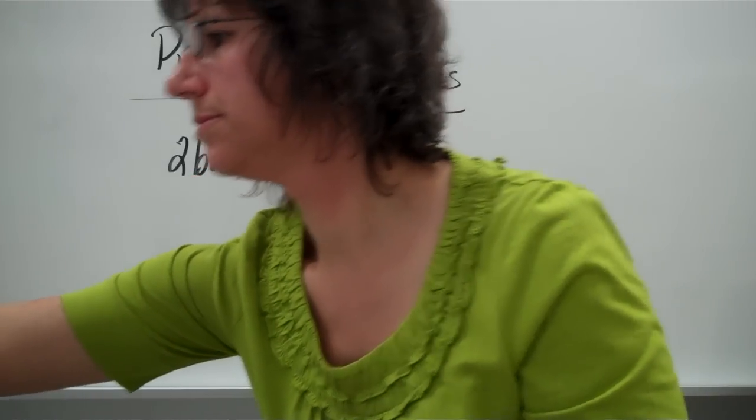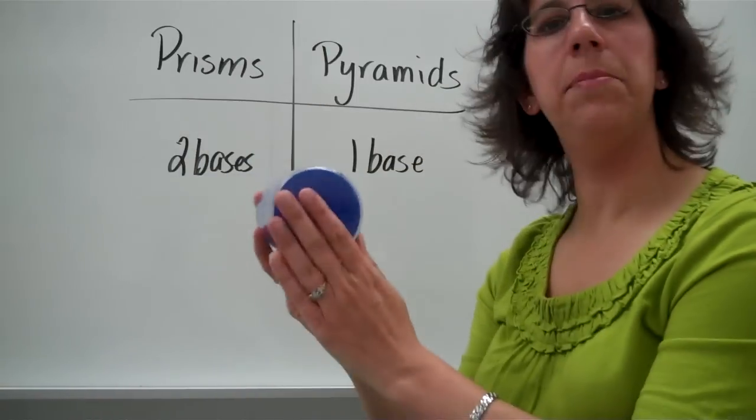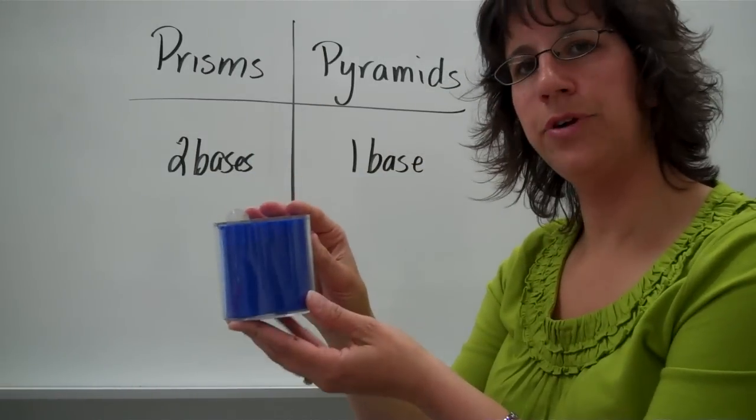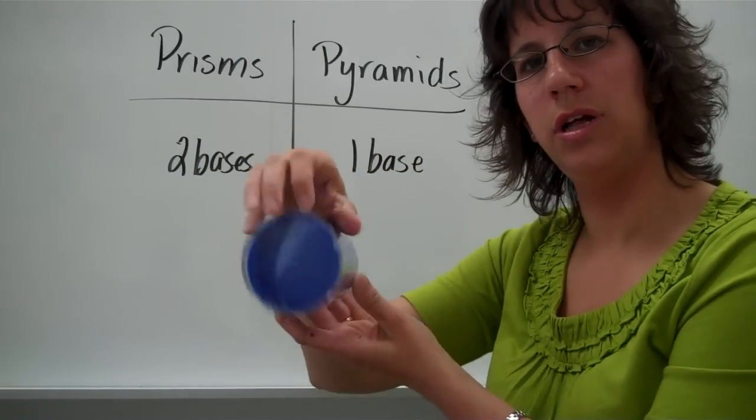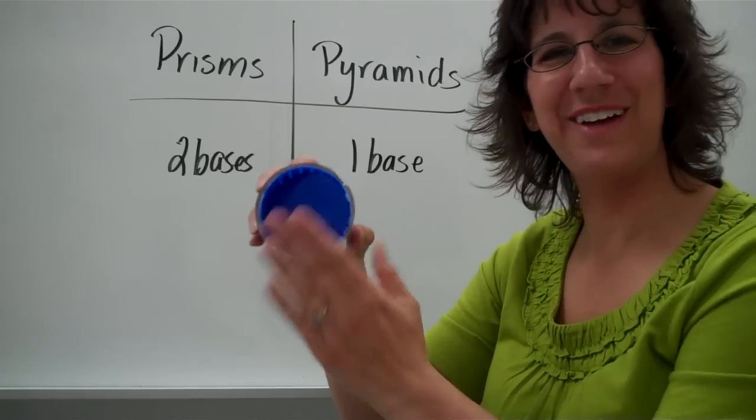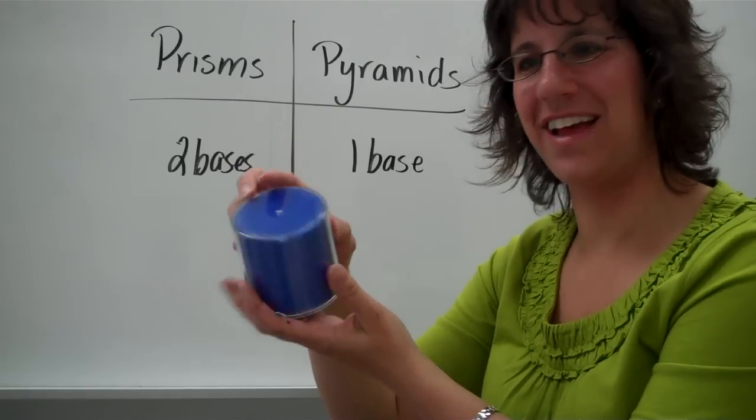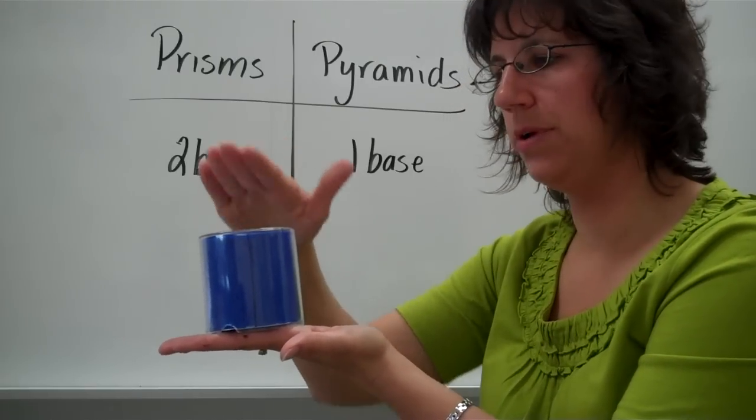A cylinder is a type of prism. It's a prism because it has a circle on one end and a circle on the other end. Typical of a soup can that you would have in your home.